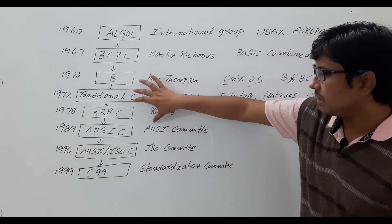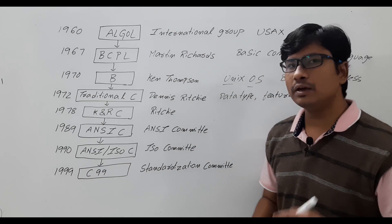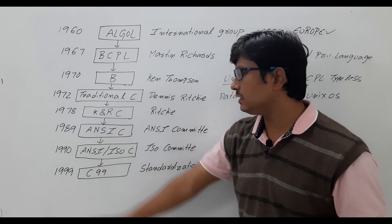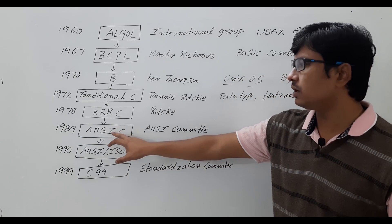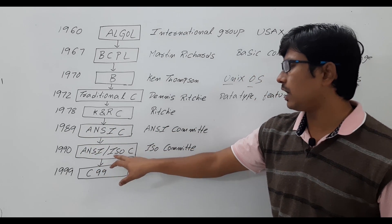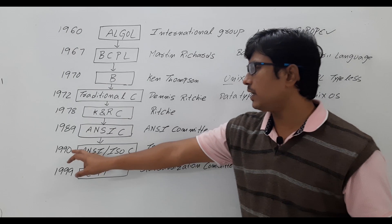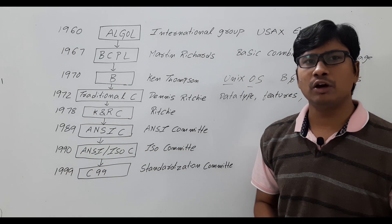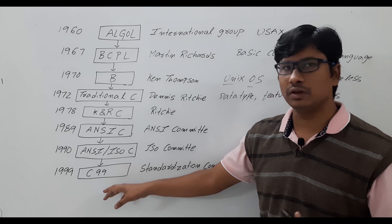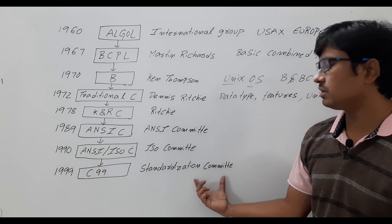The ANSI committee approved a version of the C programming language, and that version became known as ANSI C. Then in 1990, the ISO committee — International Standard Organization Committee — also approved the same standard. Between 1990 and 1999, other programming languages such as C++ and Java also came into the picture. They added more features to the ISO C standard and came out with a version called C99, which was developed by the Standardization Committee.